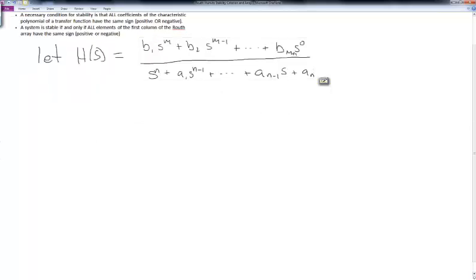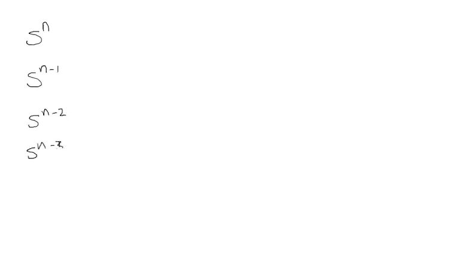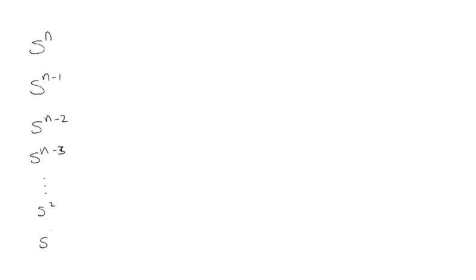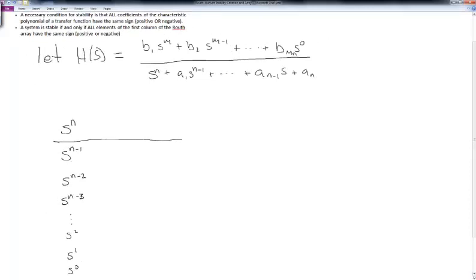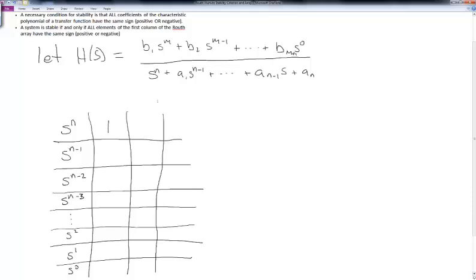Once we have the transfer function, we start forming the array by first taking the powers of s that appear in the denominator and placing those in a column: s^n, s^(n−1), s^(n−2), s^(n−3), and so on down to s^2, s^1, and s^0. Then we draw some lines to form our table and start placing the coefficients. We start with 1 — the leading coefficient in front of s^n — then skip to the next, so a2 goes there, then a4, and so on.